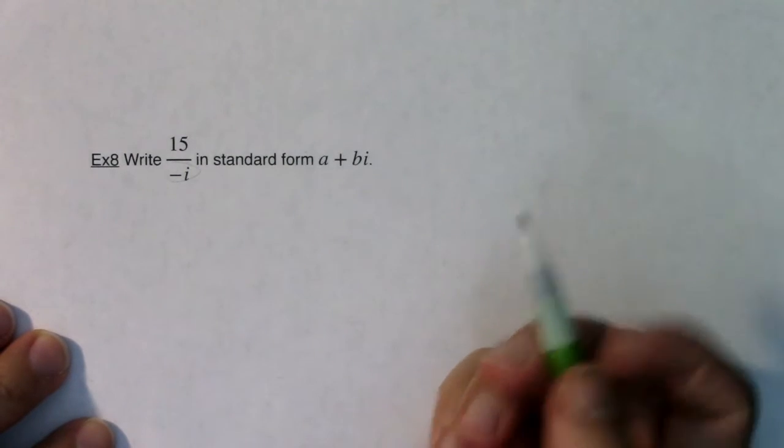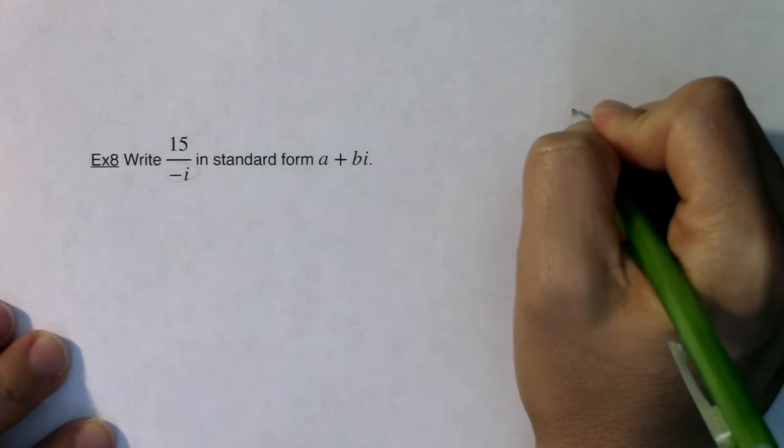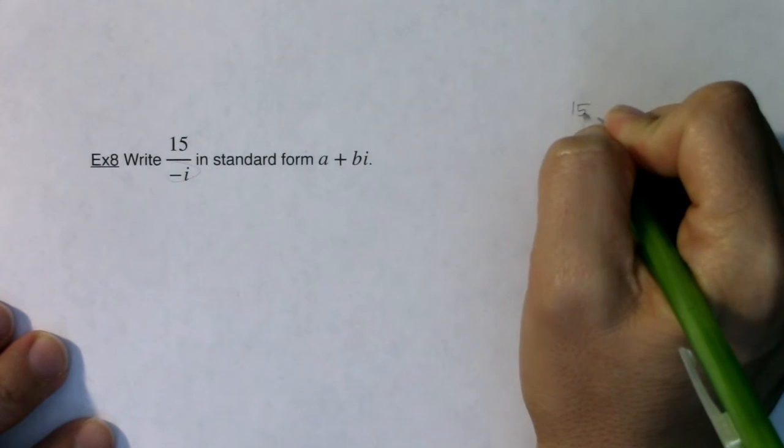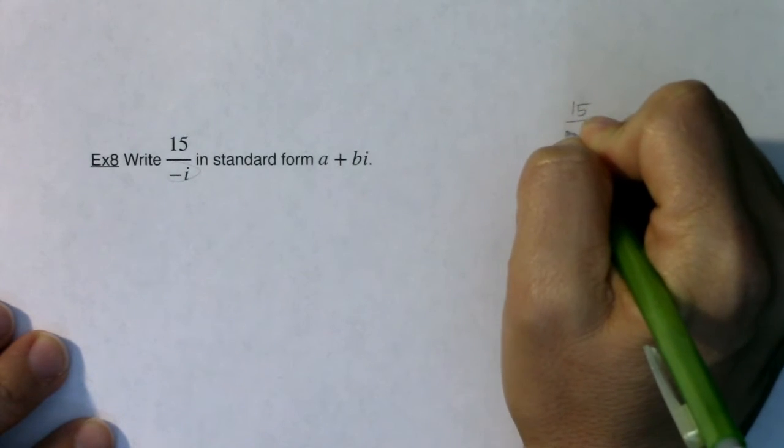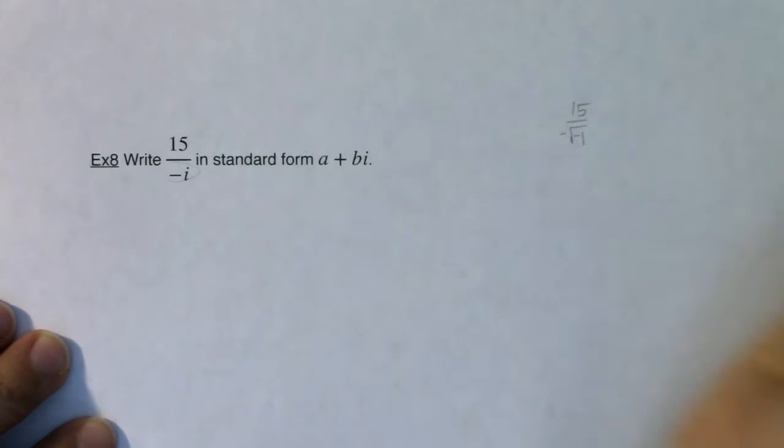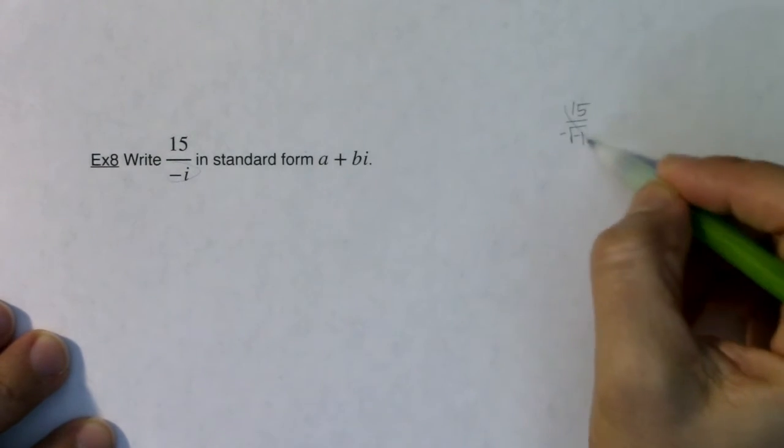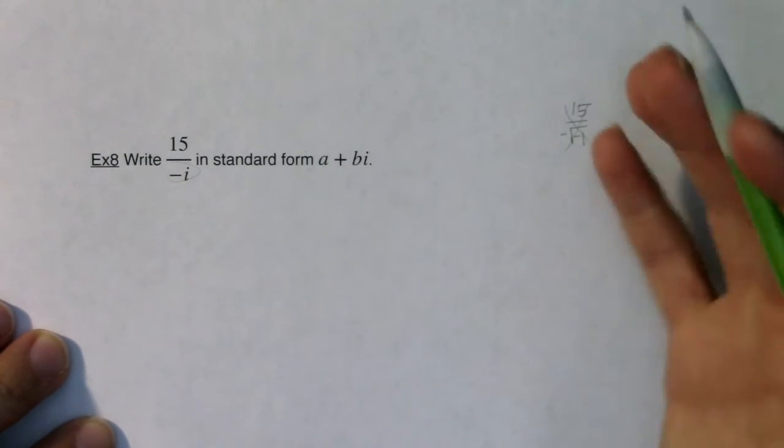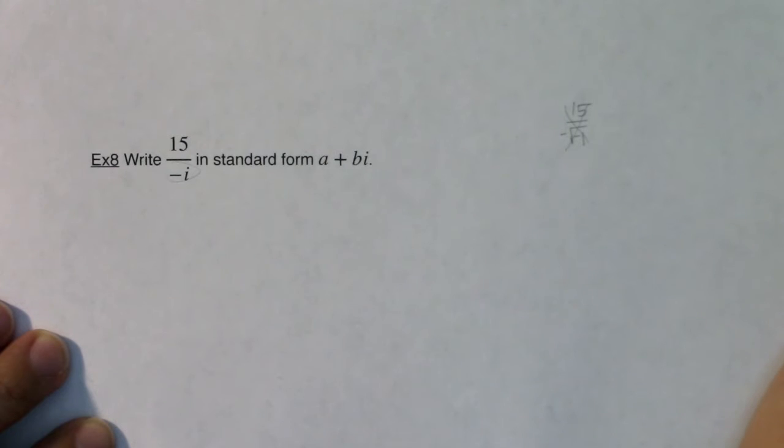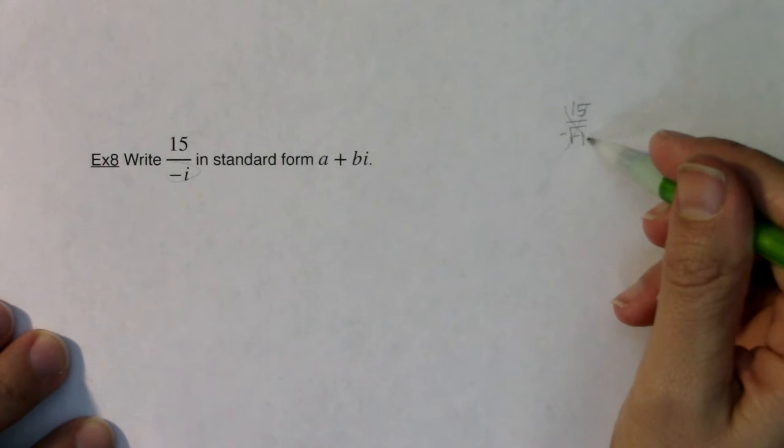Technically, 15 over negative i is like saying 15 over the square root of negative 1, and we don't like having radicals in the denominator. We're going to use the same technique that we did to get rid of radicals in the denominator - we're going to multiply by a conjugate.